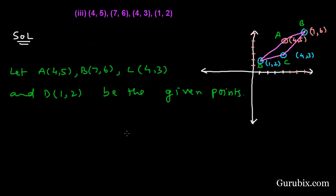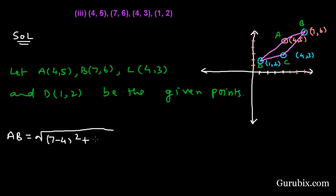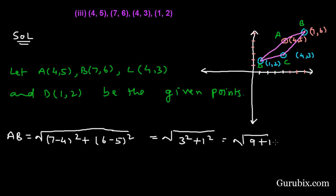Now we shall find the distances AB, BC, CD, and DA. AB = √[(7−4)² + (6−5)²] = √[3² + 1²] = √[9 + 1] = √10.